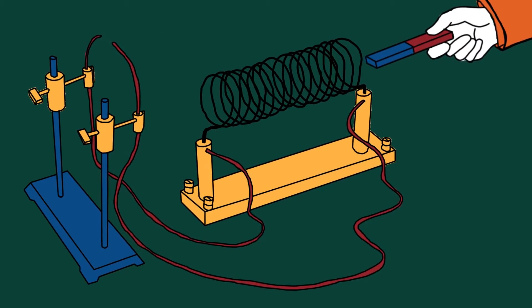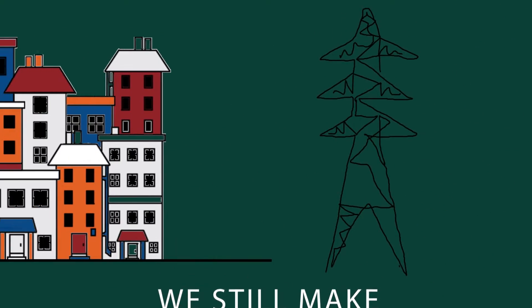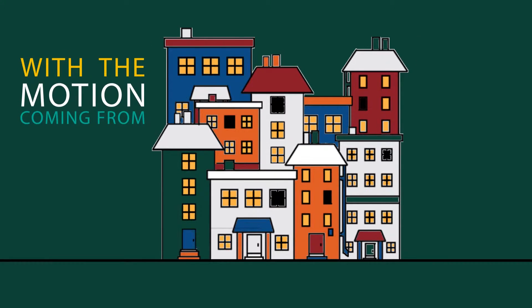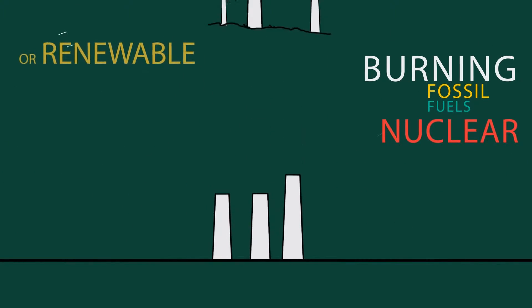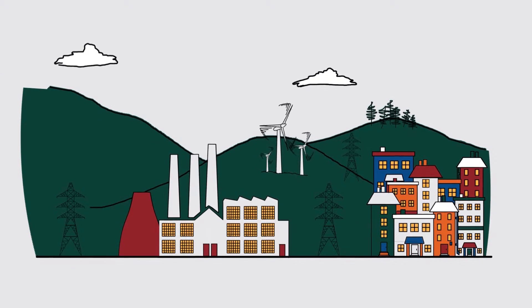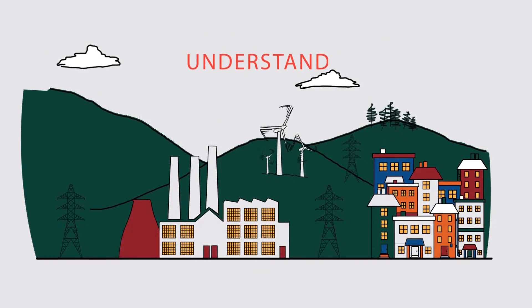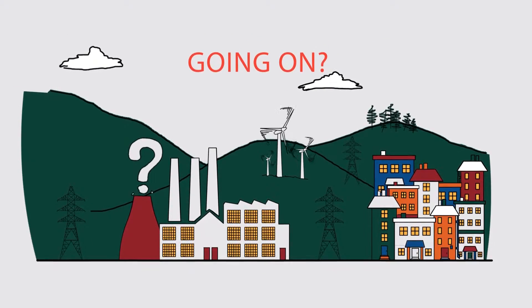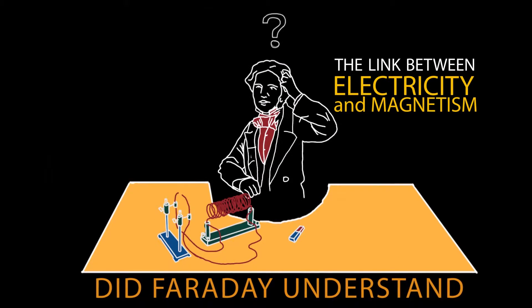This is how we make electricity today, whether the motion comes from burning fossil fuels, nuclear or renewable sources. But as impressive as this achievement is, do you understand what's going on? Did Faraday understand how electricity and magnetism were linked?